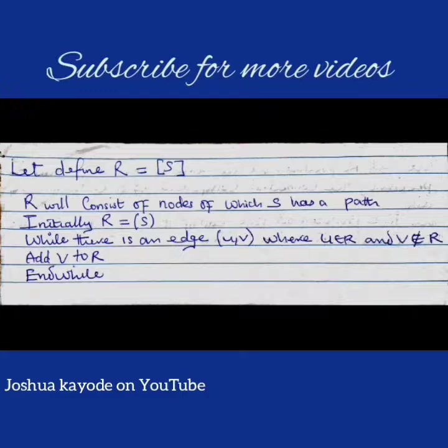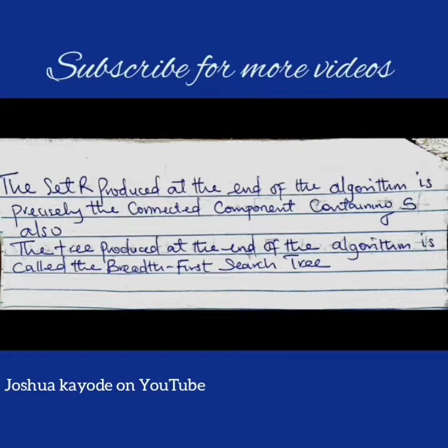The BFS algorithm: Let R be a set which includes S — R will consist of nodes to which S has a path. Initially, R consists of only S. While there is an edge where U is an element of R and V is not an element of R, add V to R. The set R produced at the end of the algorithm is precisely the connected component containing S. The tree produced at the end of the algorithm is called the BFS tree.